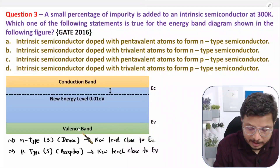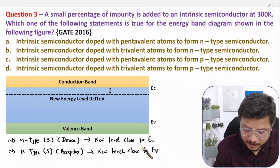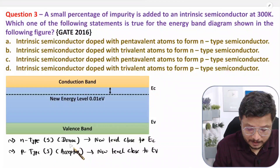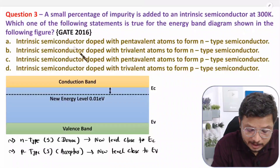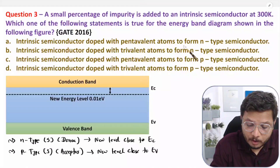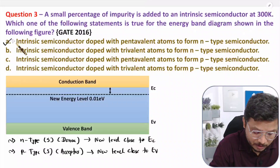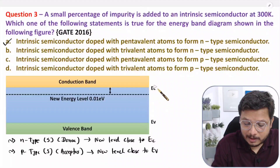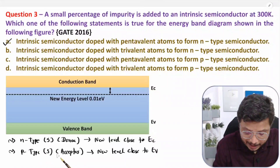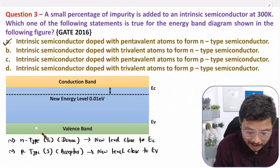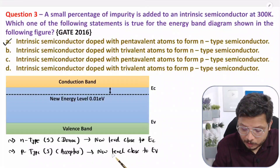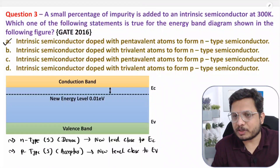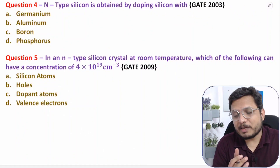Reading the options: the diagram shows an intrinsic semiconductor doped with pentavalent atoms to form an n-type semiconductor material. This is the correct option because the new energy level is shifted nearer to Ec. If acceptor impurities were added instead, the new level would be close to Ev. So this option is correct.